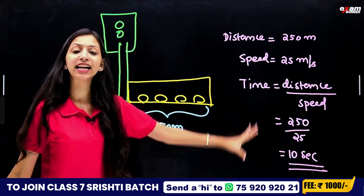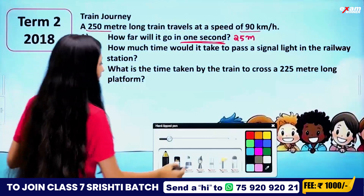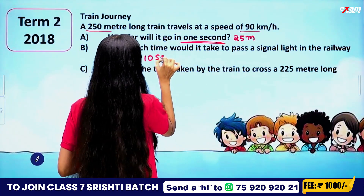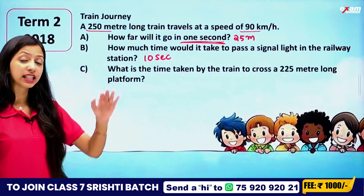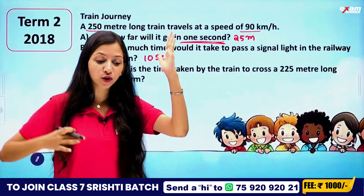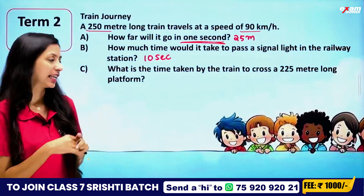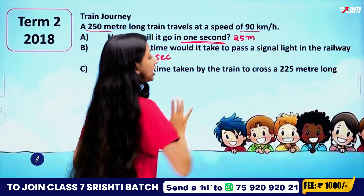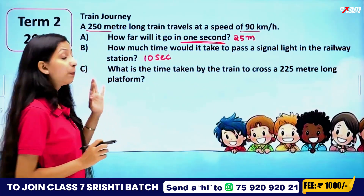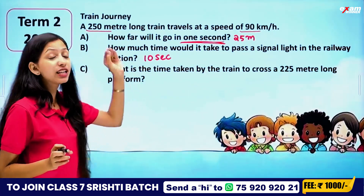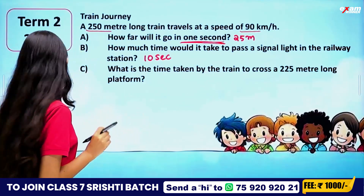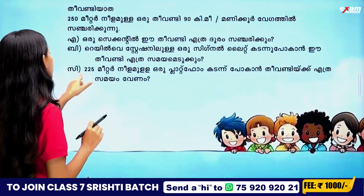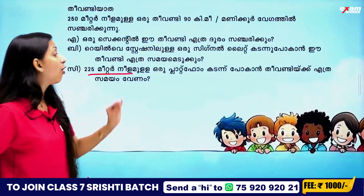The answer is 10 seconds. Very simple. There is also the question: what is the time taken by the train to cross a 225-meter-long platform? The speed is 25 meter per second.